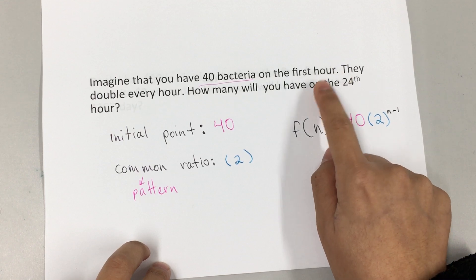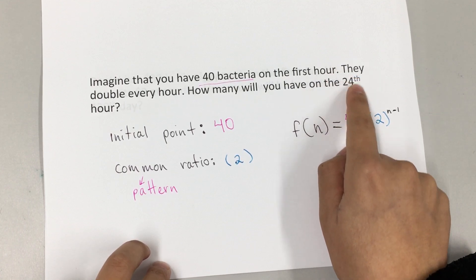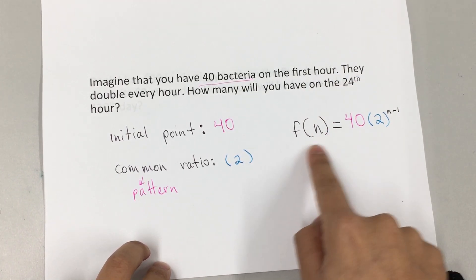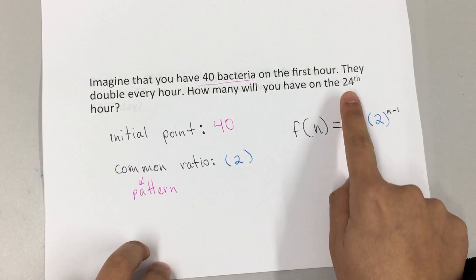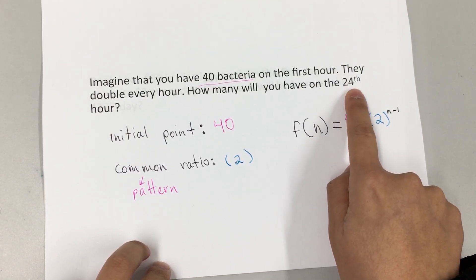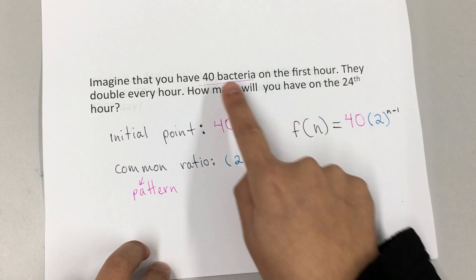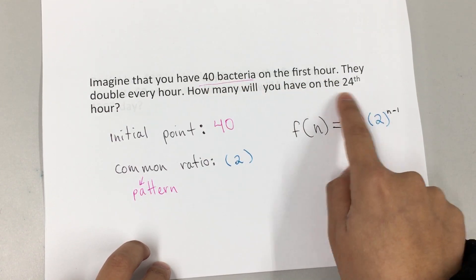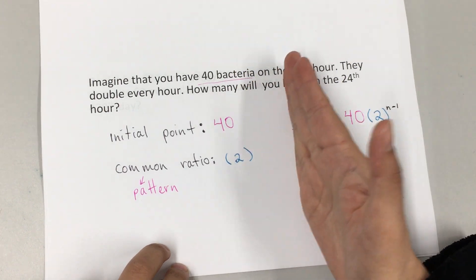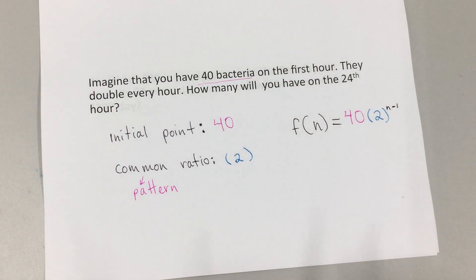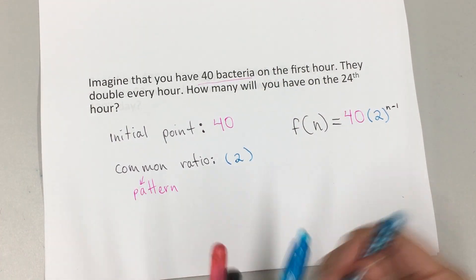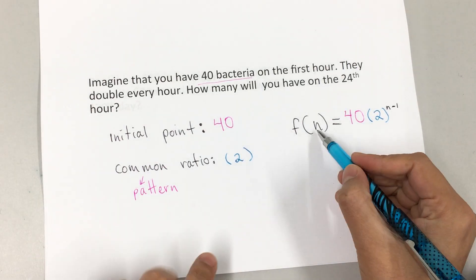However, with explicit formula we can directly figure out the number of bacteria on that specific day. We don't have to do one by one by one. So we're going to use the explicit formula. We're going to replace n with 24 because that's the hour that we want to figure out.